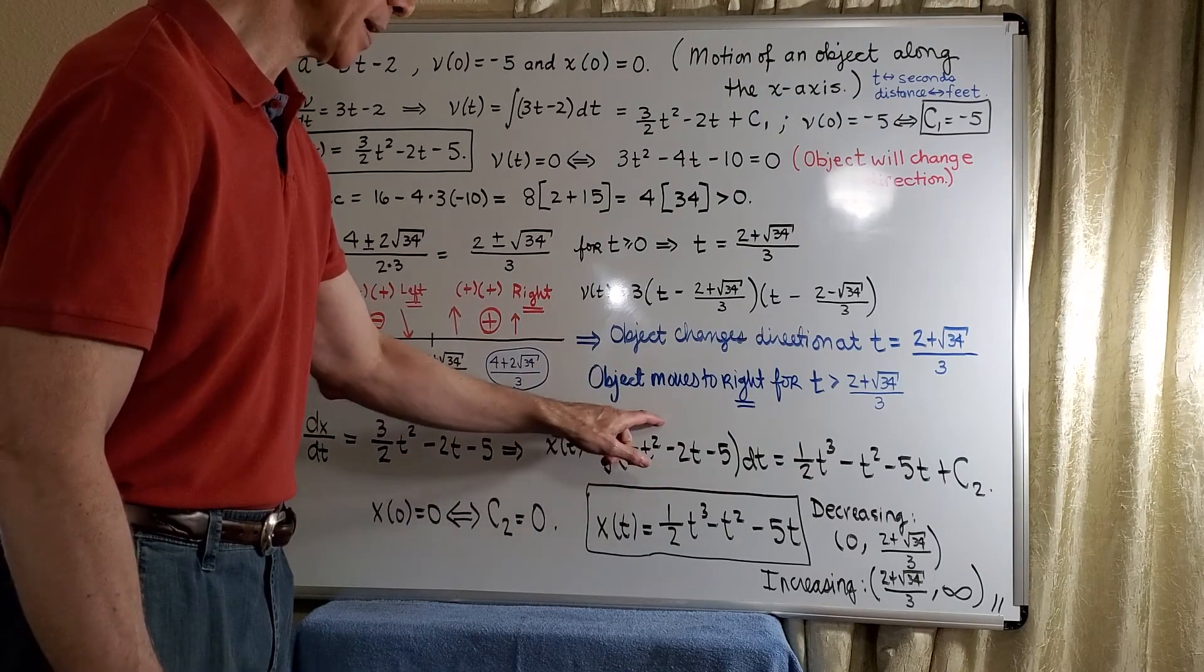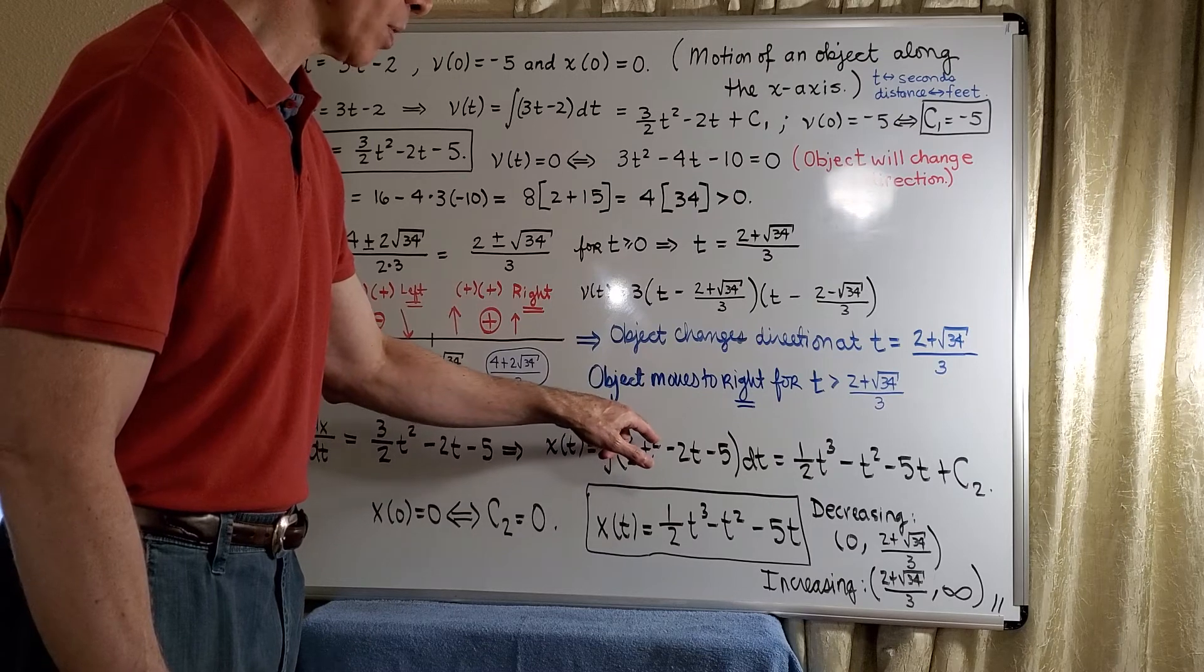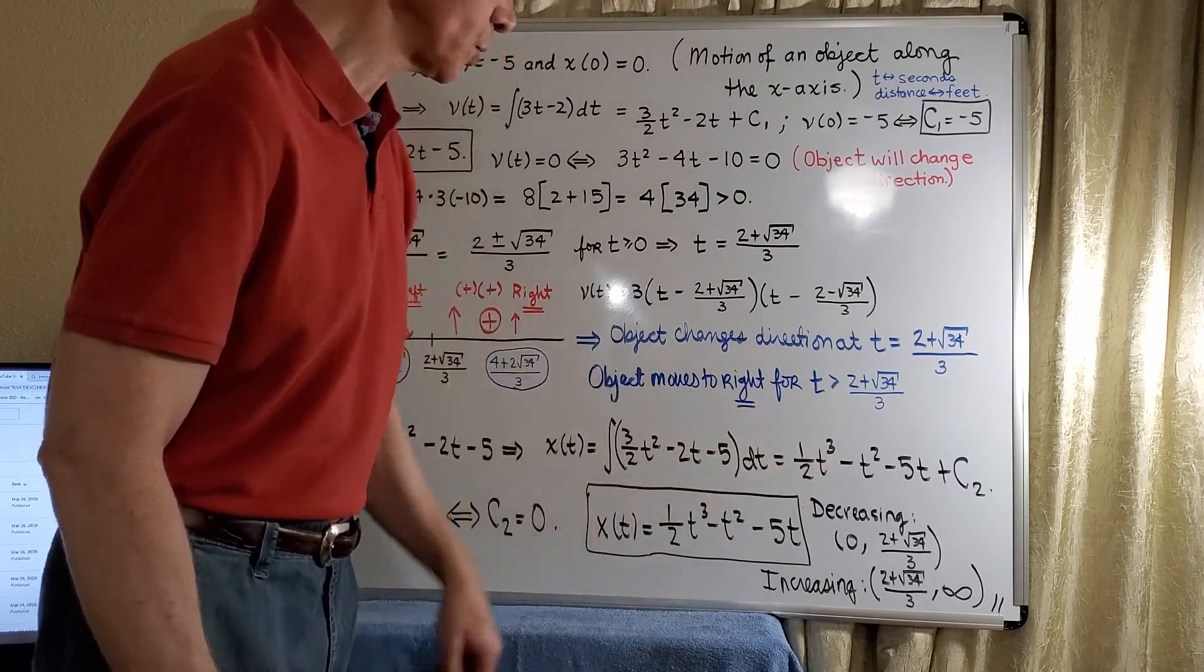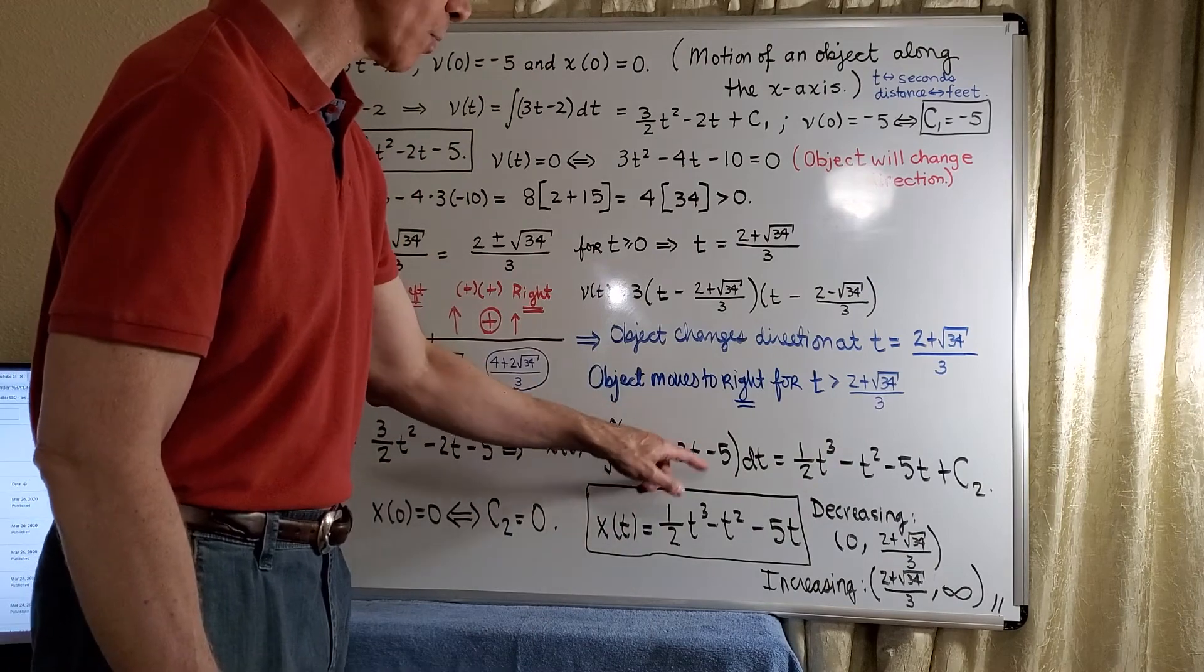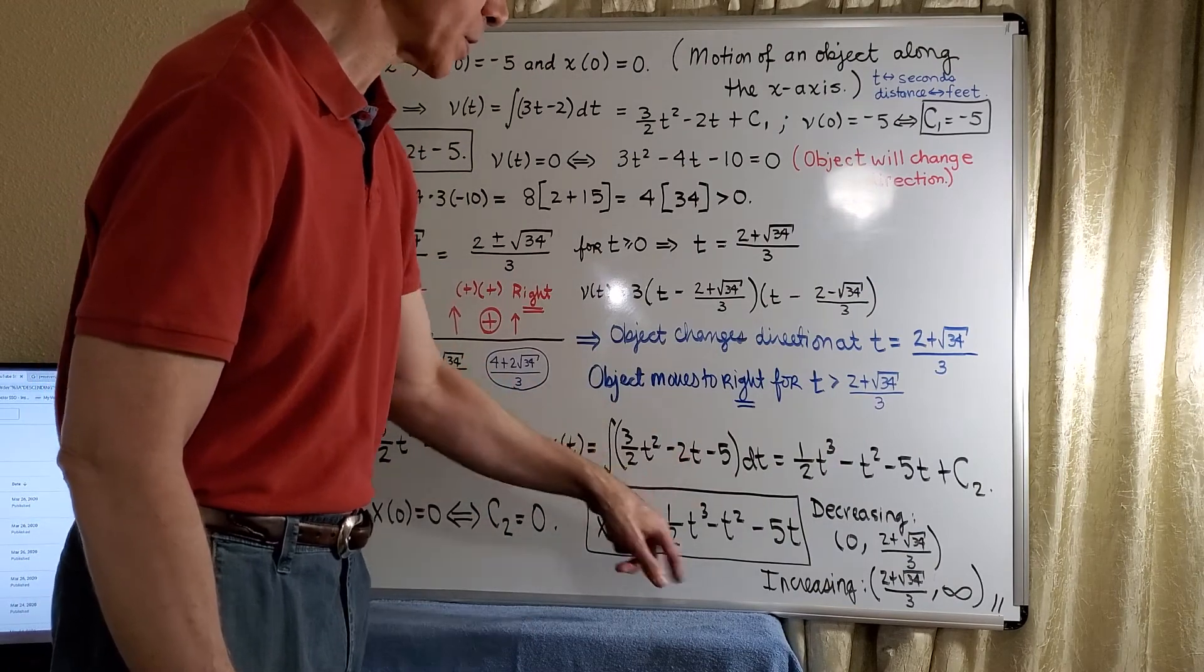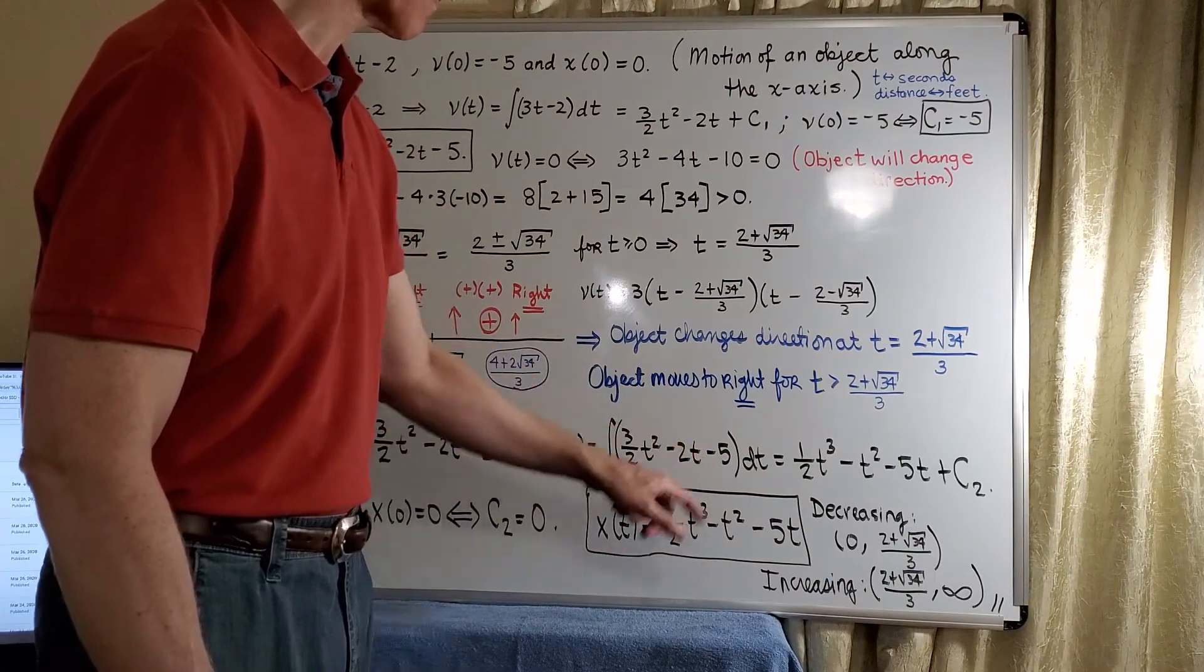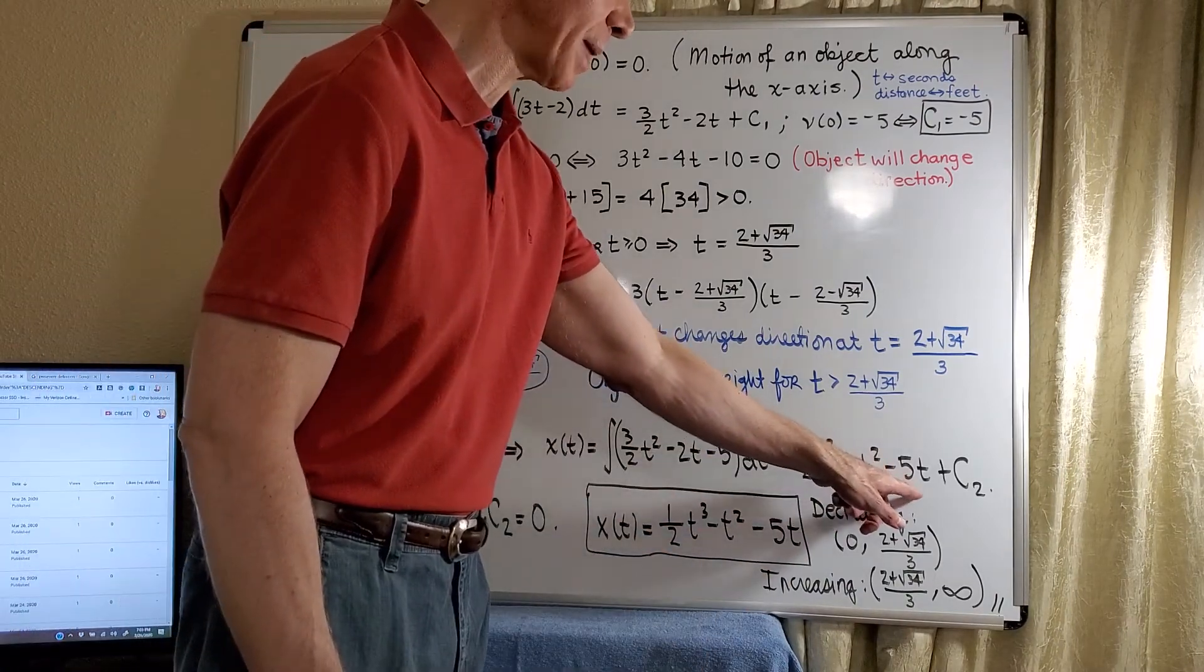This is all add 1, divide by the new power. So when we divide by the 3, adding 1 to 2, that will absorb this 3 and give us 1/2 t cubed. And when we add 1, divide by the new power, we absorb the 2 and we just get minus t squared. And the minus 5 just anti-differentiates to minus 5t, and then we have an arbitrary constant, which we label differently.